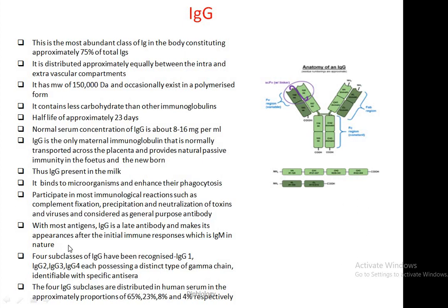When our body receives an antigen, IgM appears first, and thereafter IgG appears. IgG molecules have been divided into four subclasses: IgG1, IgG2, IgG3, and IgG4, each possessing a distinct type of gamma chain identifiable with specific antiserum. The four IgG subclasses are distributed in human serum in the proportions of 65%, 23%, 8%, and 4% respectively.